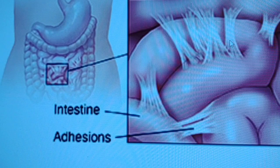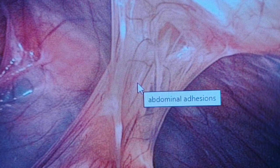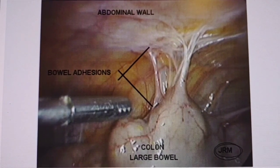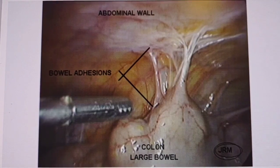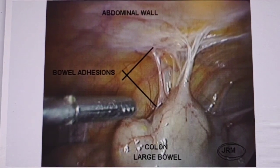Adhesions often form between small bowel loops, like in this picture and this one here, and they also frequently attach loops of bowel to the parietal peritoneum, mainly the abdominal wall and subperitoneal organs.